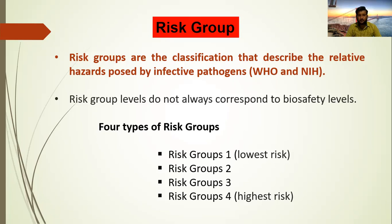Microorganisms are divided into four groups — four types of risk groups. This division is based upon the pathogenicity of the microorganisms and the availability of effective treatment and preventive measures. The four types are risk group 1, 2, 3, and 4. Risk group 1 microorganisms have the lowest risk for both individual and community, and risk group 4 microorganisms have the highest risk for both community and individual.